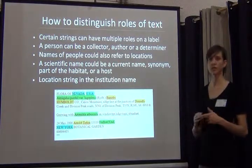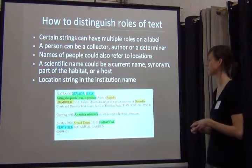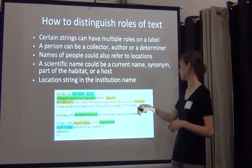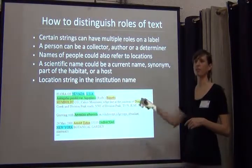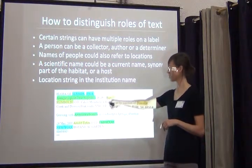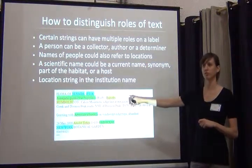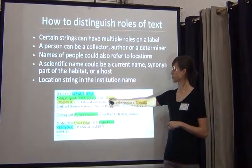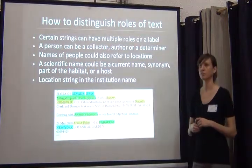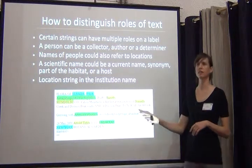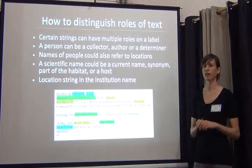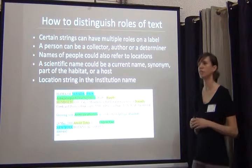A person could be the collector, the determiner, or the author of a scientific name. But names of people can also be used as locations. In this example, Donnelly and Humboldt are names of people, but on this label they're actually being used as location fields. Barnabey here is also another name. One problem you can see in the OCR output — it's supposed to be Barnabey, B-A-R-N-E-B-Y — but the R-N close together made it an M in the OCR output. Even on really nice, well-typed and formatted labels, you're still going to have some OCR errors, so keep in mind that the clean-up side of OCR text is also something to factor in.